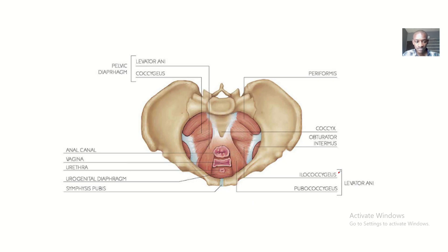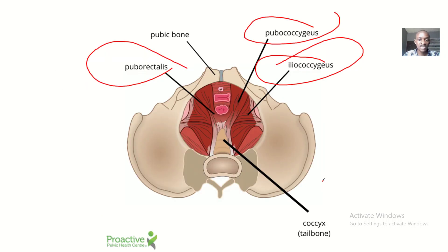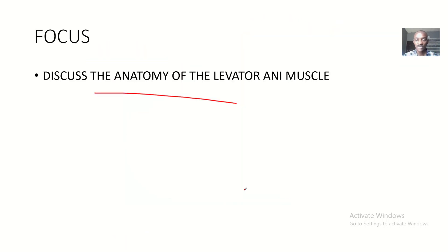In this image we can see the levator ani, iliococcygeus, and pubococcygeus labeled, though puborectalis is not labeled here. The levator ani muscles insert at the sides of the sacrum and the coccyx. That's the anatomy of the levator ani muscles.